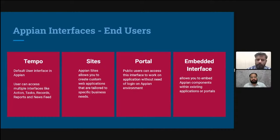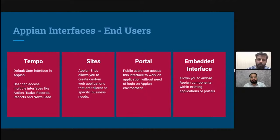Reports in Tempo include charts and metrics related to multiple objects. You can create metrics and different types of graphs to check company performance — like how many requests are raised, how many are on a particular status, and so on. This is the type of activity you can perform on Tempo.